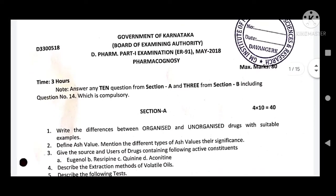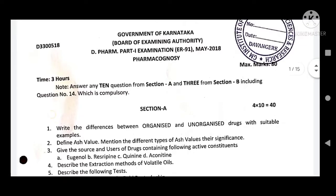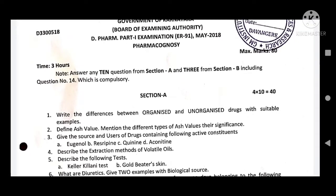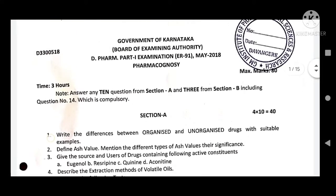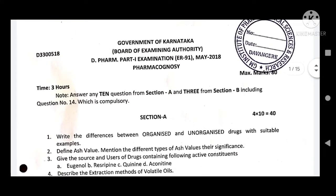Take a print copy and start studying from today itself. This is a Government of Karnataka Board of Examining Authority D Pharma Part One examination that was conducted in May 2018 — Pharmacognosy. The same pattern will apply this year also — no change in the pattern of the question paper. The questions are very easy.